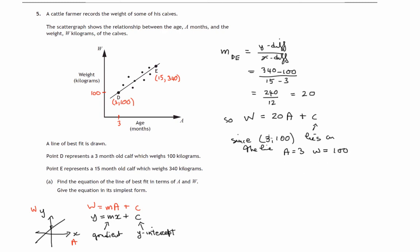And let's substitute that in. So we now know that 100 equals 20 times 3 plus c. From this we can work out what c is. 60 plus c. So take 60 from both sides, c will be 40. So finally we get the equation w is 20 times a plus 40.